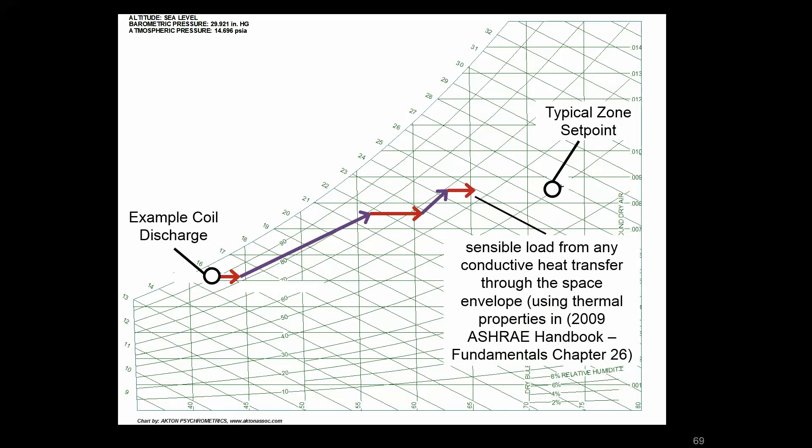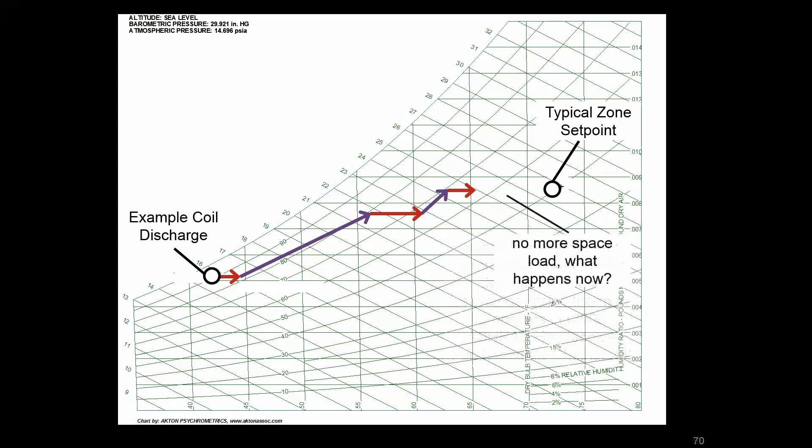And then if it's hotter outside than it is in, there's going to be some degree of sensible load from the walls and the windows with heat getting past that thermal barrier. So now what? Now we've gotten to the moisture content that we've targeted in our design process, but we're still almost 10 degrees cooler than we need to be at the thermostat. So what happens?